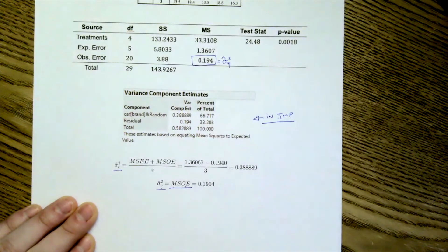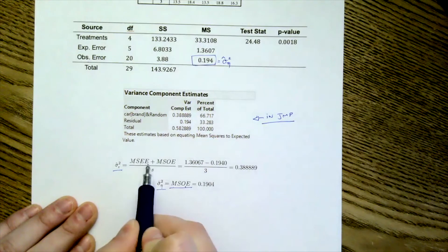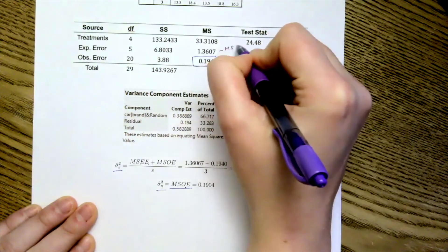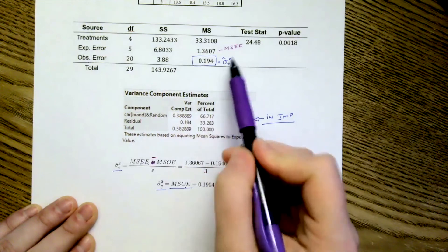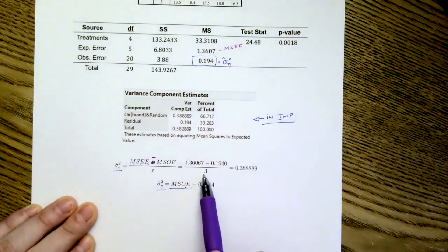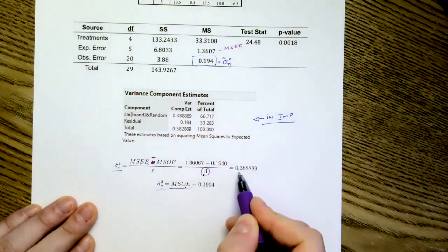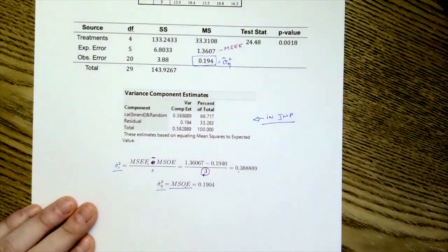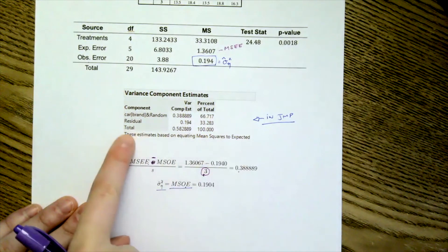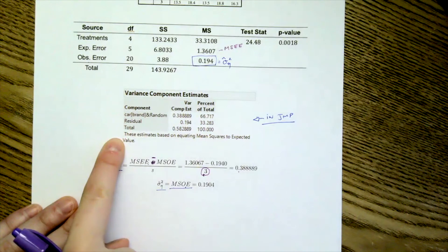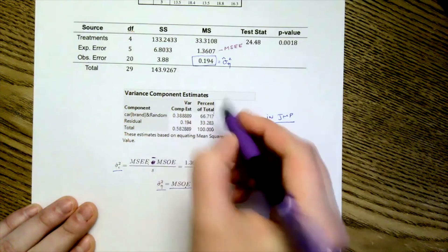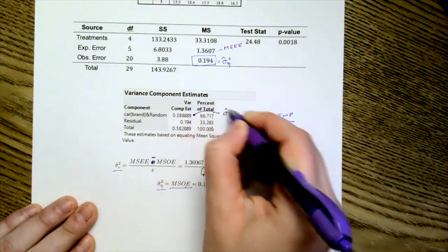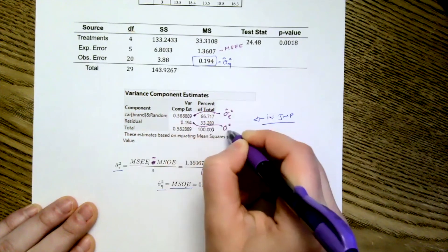Now for our MSEE, we have to be a little bit more careful. And so we have to take our MSEE, subtract our MSOE, and then divide by three. This three is because we had three subsamples, and we can get 0.388. My R users, you're going to have to do this calculation when I ask for it. My JUMP users, you will actually get this variance component estimate here. And they do a little bit of breakdown of the total variability. So here's your sigma hat squared epsilon, and here's your sigma squared eta.